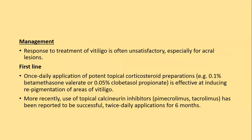The response to treatment of vitiligo is unsatisfactory, especially at acral sites — particularly surrounding the nails, which are the most difficult to treat. First-line treatment is topical corticosteroids: 0.1% betamethasone valerate or 0.05% clobetasol propionate, which are quite effective in early-stage vitiligo. Topical calcineurin inhibitors like pimecrolimus and tacrolimus are used successfully with twice-daily application, but both treatments take months for complete healing.